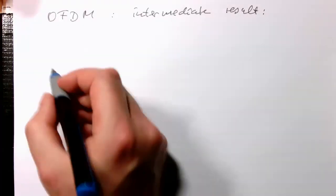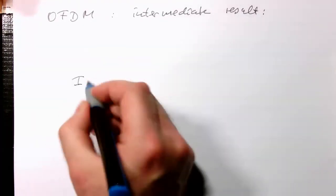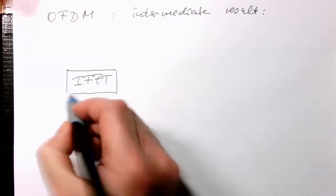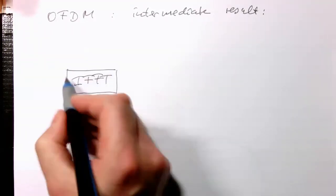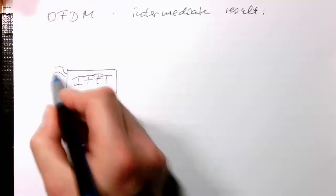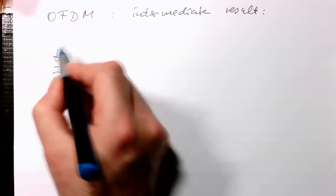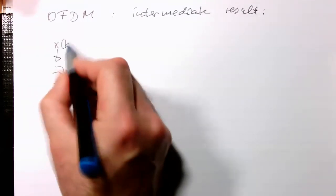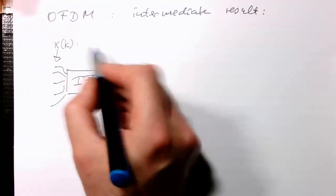So here we've got our inverse Fourier transform. The central idea is to create the symbols with the inverse Fourier transform and the input are different xk, so frequency coefficients or frequency samples.